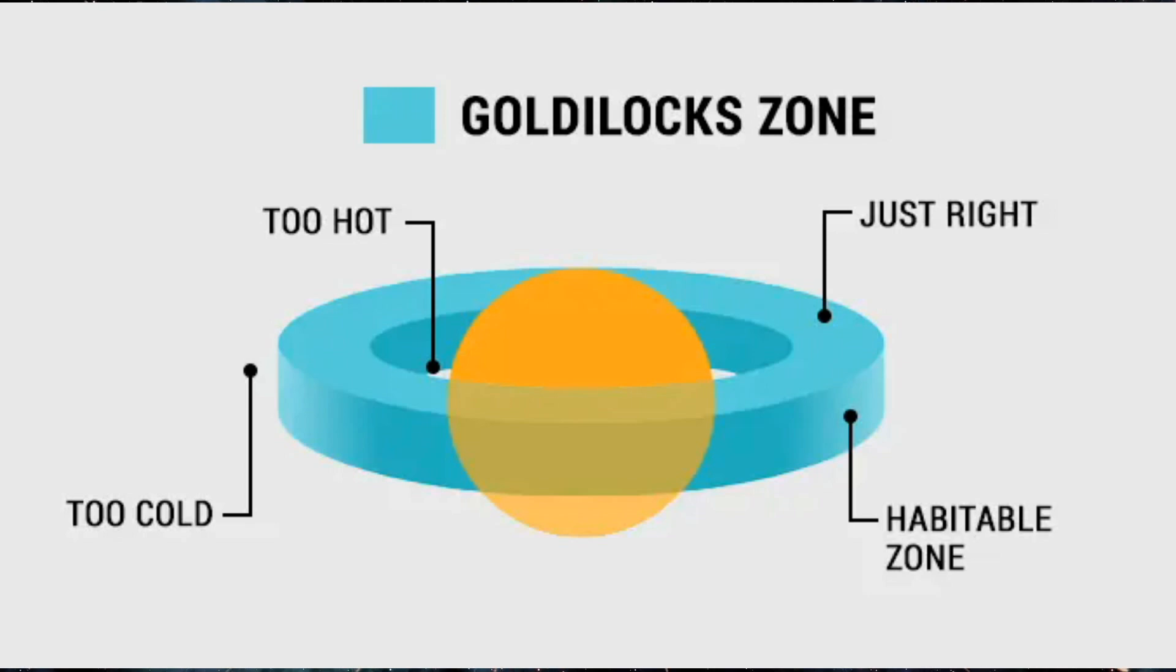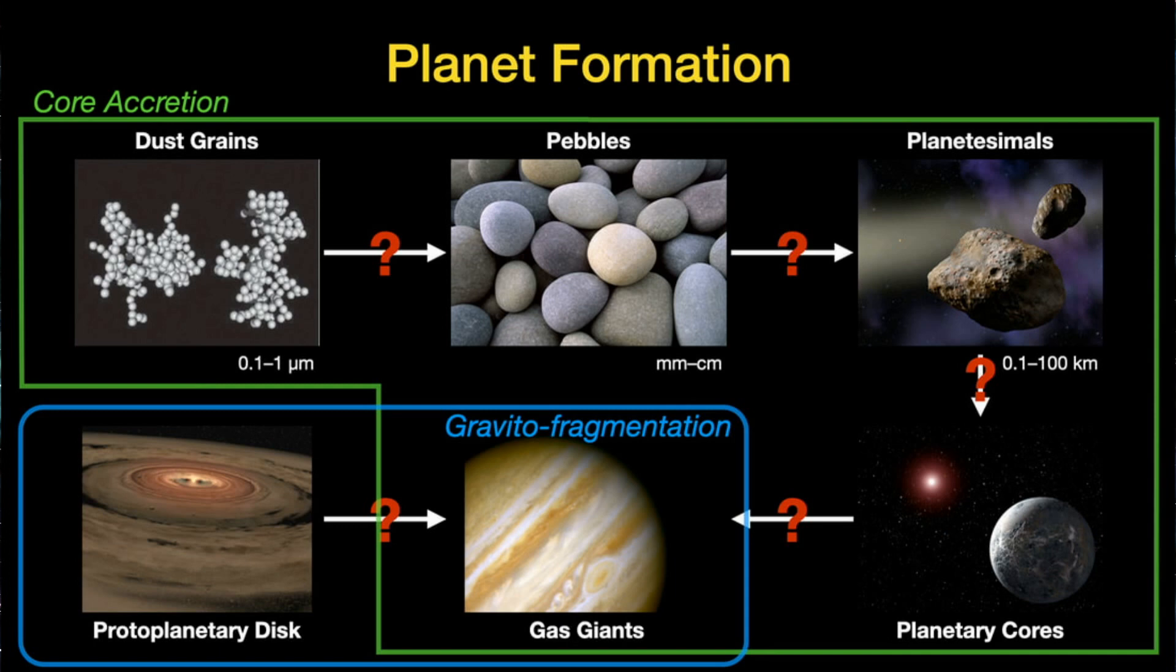The Goldilocks zone refers to the region around a star where conditions are favorable for liquid water to exist, potentially supporting life. For circumbinary planets, the habitable zone might exist in a specific range within the system where temperatures are neither too hot nor too cold. The exact formation process for these planets is still being explored.